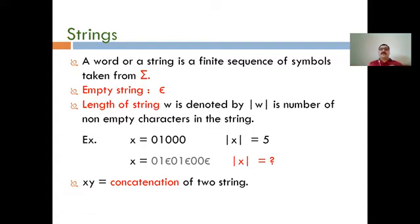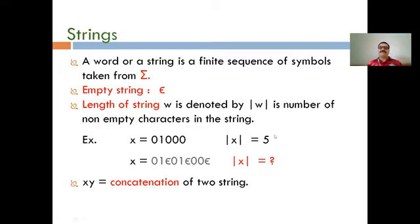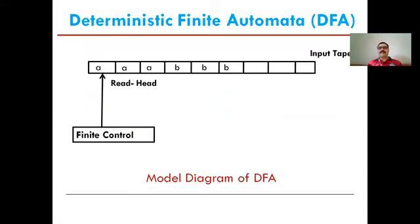A string or word is a finite sequence of symbols taken from the input alphabet. An empty string means the null string, which can be represented by the null sign or by using the epsilon sign. The length of a string is simply the number of elements in that string. This is the basic background about automata.